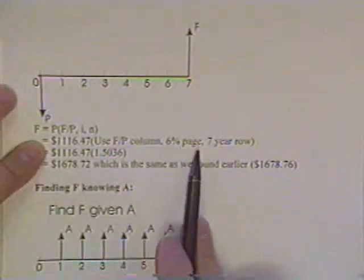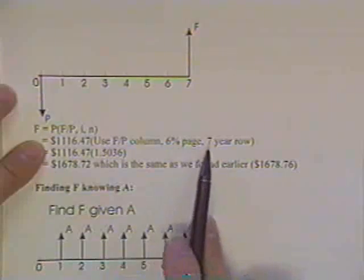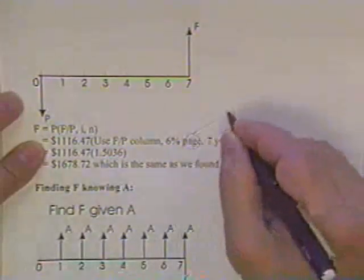Use a 6% table, because there's more than one on the page here. Use a 6% table. Use the 7-year row.